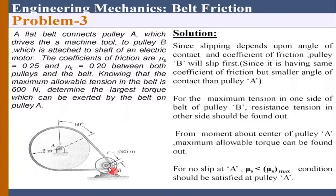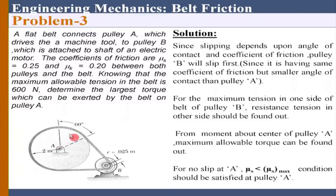Then we can impose the friction law condition: T2 by T1 equals e to the power mu_s times beta, and find out the other tension in the belt. Once that is found, we can determine the torque transmitted to pulley A. You can further show there will be no slip at pulley A - if the impending slip is at B, then T2 by T1 is less than e to the power mu_s times beta at A, meaning the required mu_s is less than the maximum static coefficient of friction.